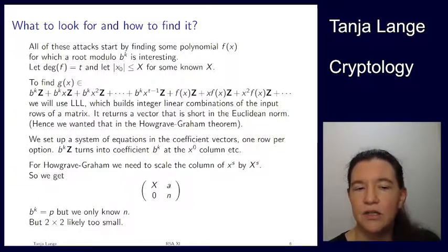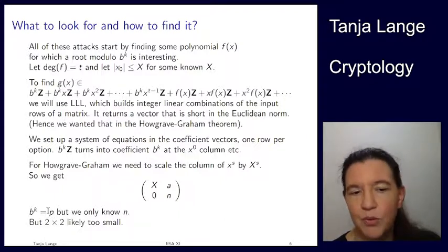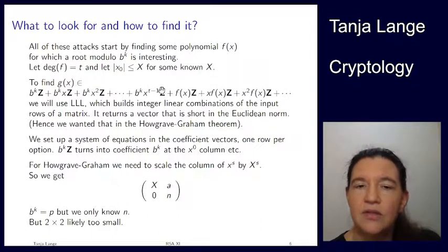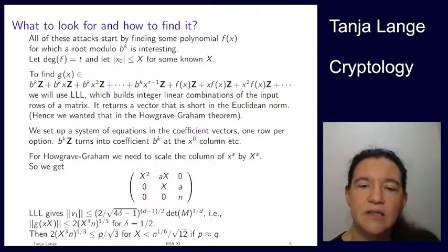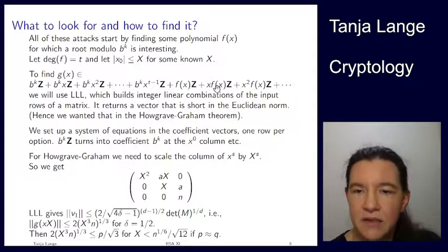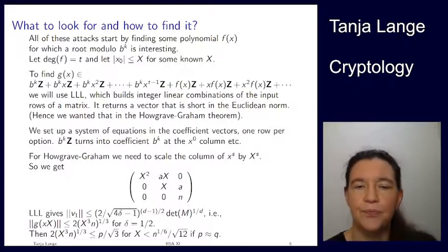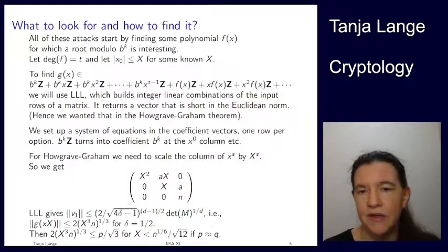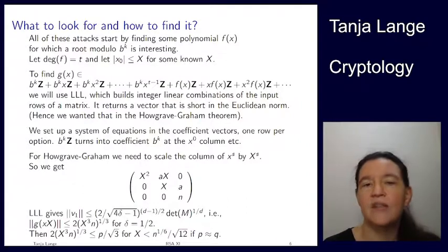The polynomial still has degree one, so we have a constant term and fill in more polynomials to get the 3×3 matrix. This gives us the 2×2 matrix from the previous slide, extended with multiplications by x and x². Howgrave-Graham's formulation also requires the bound X on the root to come in, so we use f(X·x) instead of f(x) — that's where these uppercase X factors appear.